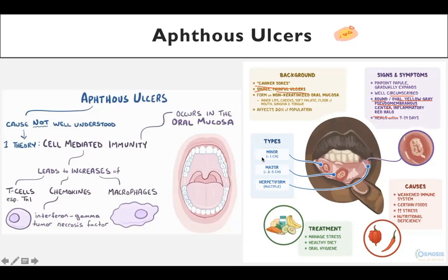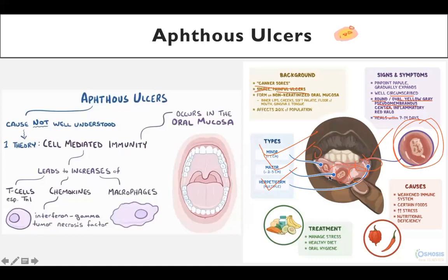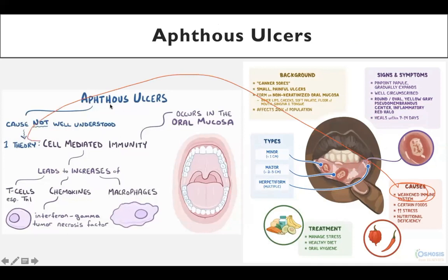There are three types: minor, major, and herpetiform. Minor is less than one centimeter. Major is two to three centimeters. Herpetiform means multiple small ulcers — they are smaller than minor but multiple in number, occurring in clusters. Causes include weakened immune system, and although idiopathic, one theory involves cell-mediated immunity.